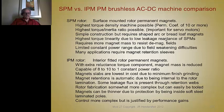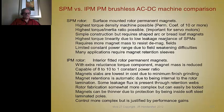The IPM motor has interior fitted permanent magnets inside a rotor core with an extra reluctance torque component, so magnet mass can be reduced compared to an equivalent surface mount design. It achieves an 8-to-10-to-1 constant power ratio, which is very impressive. Magnet slabs are lowest cost due to minimum grinding — they can be rectangular slabs. Magnet retention is nearly free since magnets are internal to the rotor laminations. Rotor fabrication is more complex but easily automated. Thinner magnets are possible since soft steel laminated poles protect against demagnetization. Control is more complex but justified by performance gains.